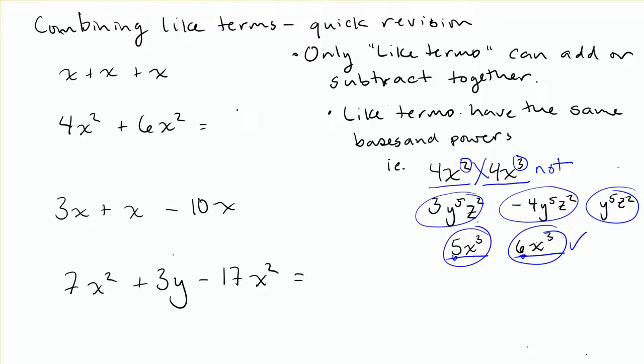So remembering a few key things. If you've got letters with no numbers in front, there'll be an invisible one in front, so you can draw those in if you need. So x plus x plus x, you keep the base the same. That's just counting up how many x's we have, and there's 1, 2, 3 of them. 1 plus 1 plus 1 is 3, so 3x, and the base stays the same.